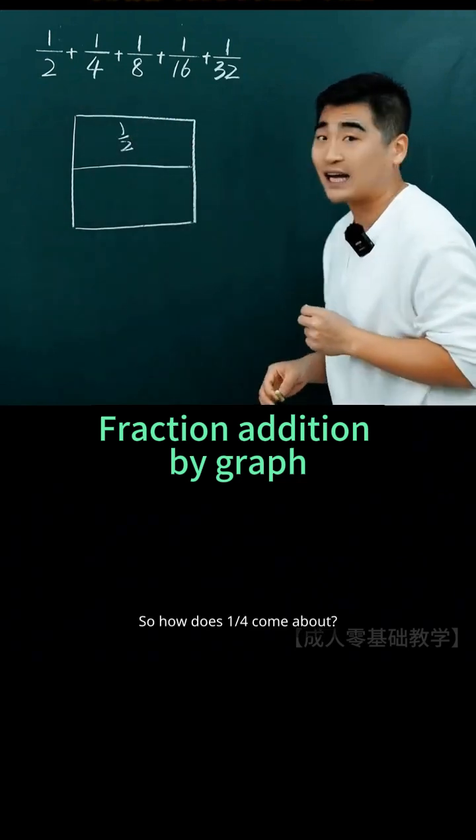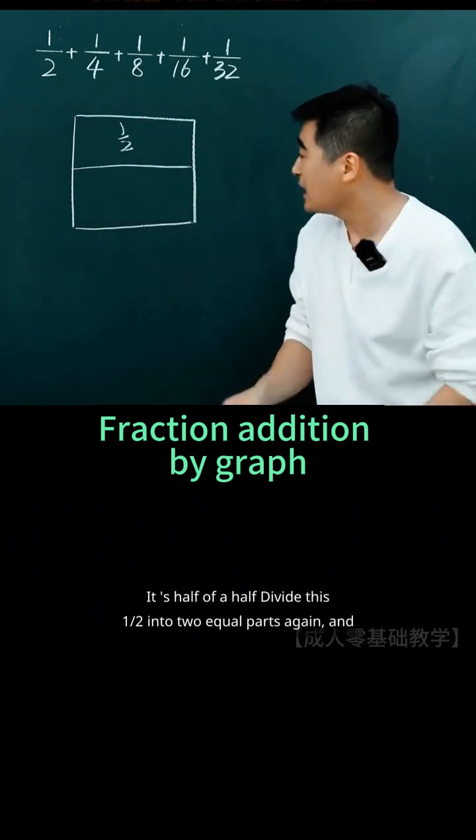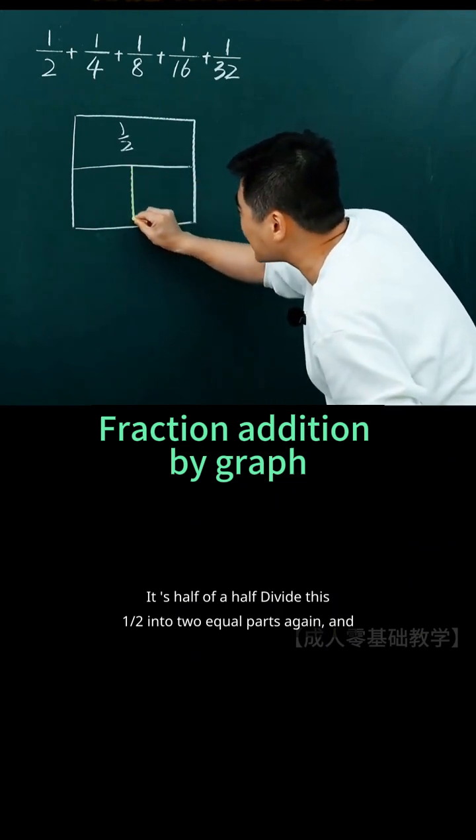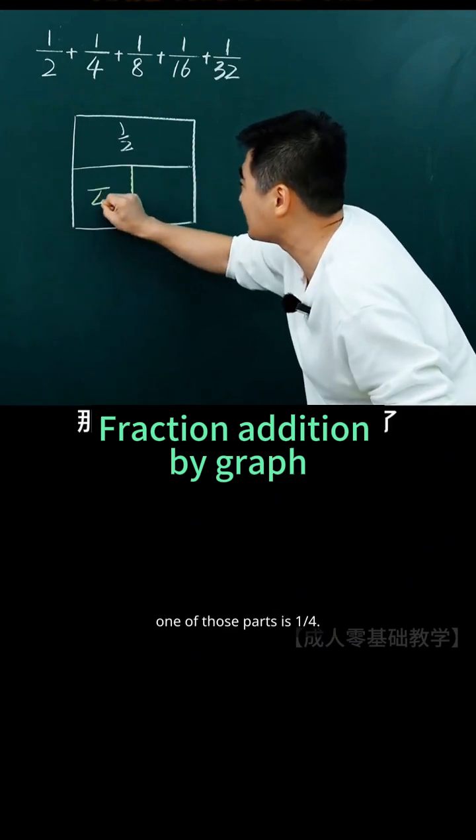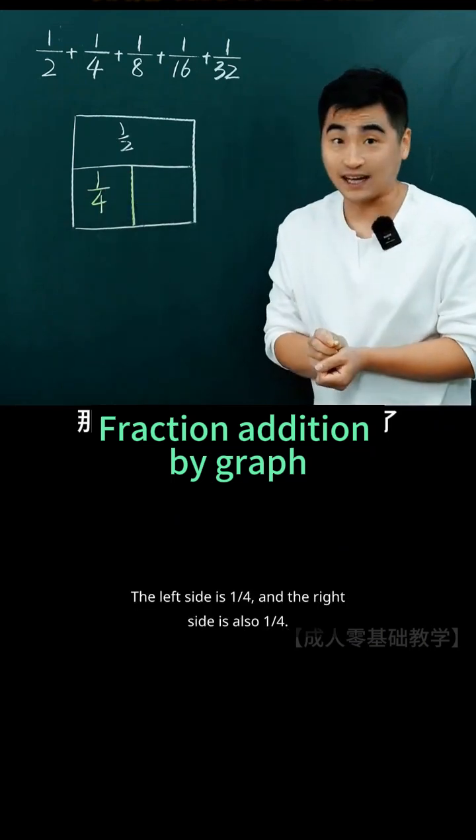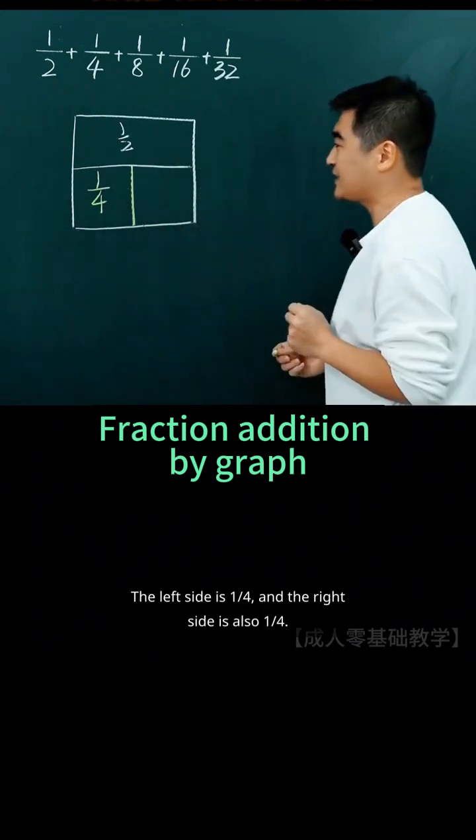How does 1/4 come about? It's half of a half. Divide this 1/2 into two equal parts again, and one of those parts is 1/4. The left side is 1/4, and the right side is also 1/4.